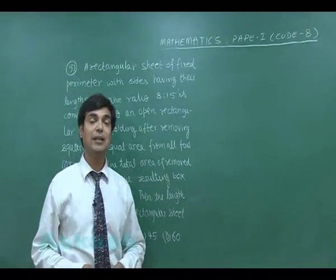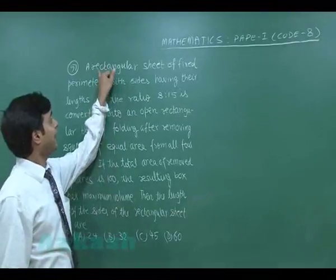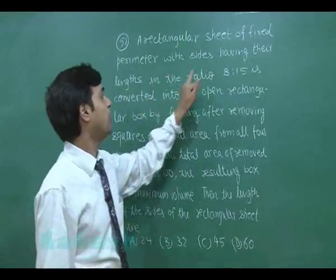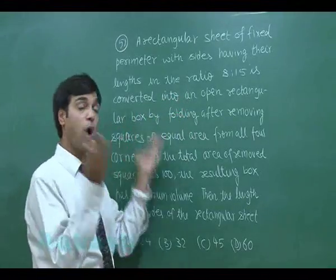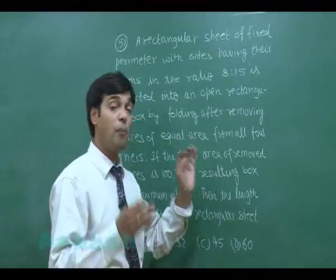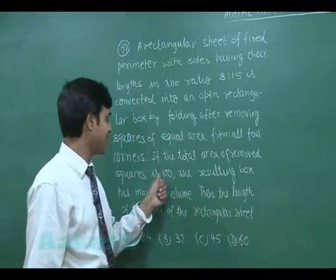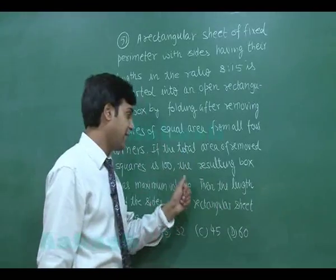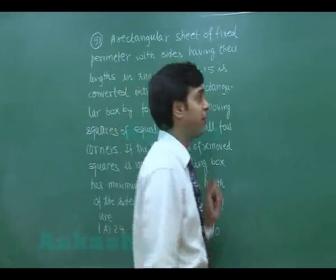Now for section 2, that is more than one answer correct, starting with question number 51. A rectangular sheet of fixed perimeter with sides having their lengths in the ratio 8:15 is converted into an open rectangular box by folding after removing squares of equal area from all four corners. If the total area of the removed squares is 100 and the resulting box has maximum volume, then the lengths of the sides of the rectangular sheet are to be found.